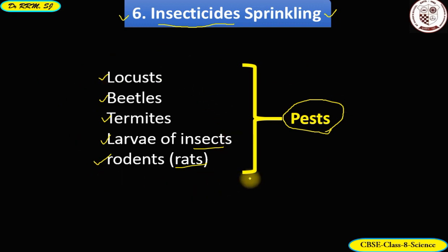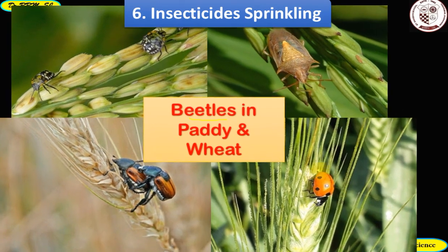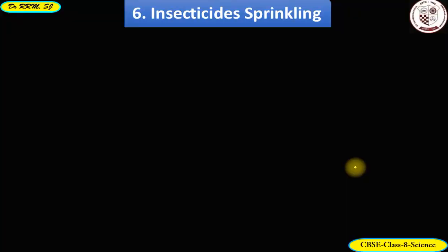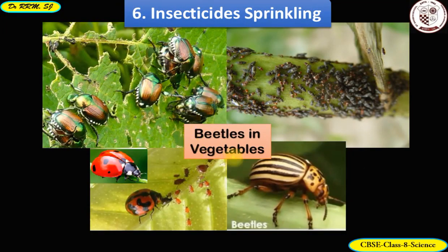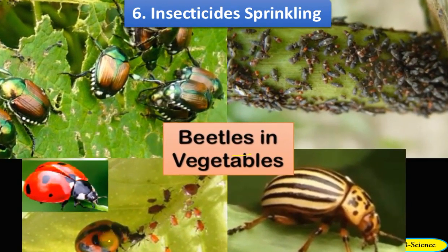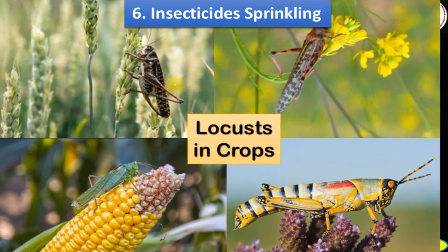Let me show you some images of insects and pests. There are a variety of beetles that damage crops of paddy and weed. These colorful small beetles suck the sap from tender paddy and weed. Another bunch of beetles damage the leaves and fruits of vegetables. Here is a family of ladybird beetles, and locusts too are enemies of farmers — they look graciously beautiful but are unappeasable eaters of crops.